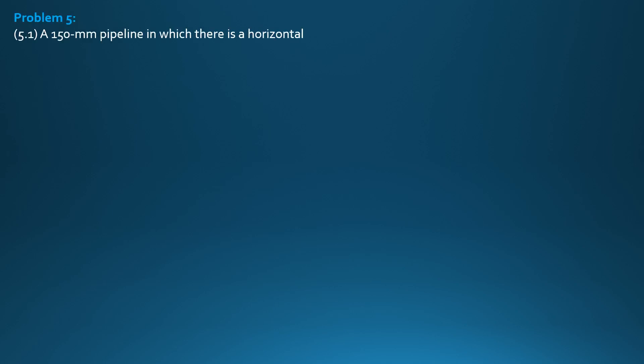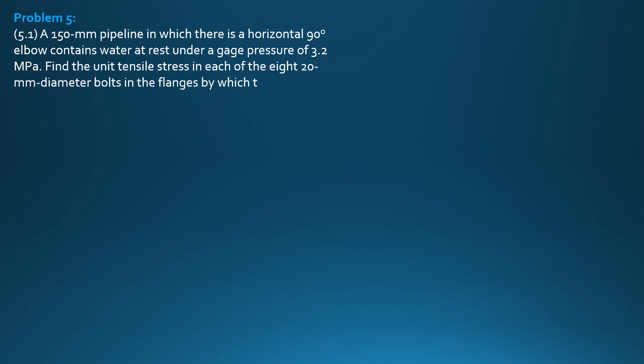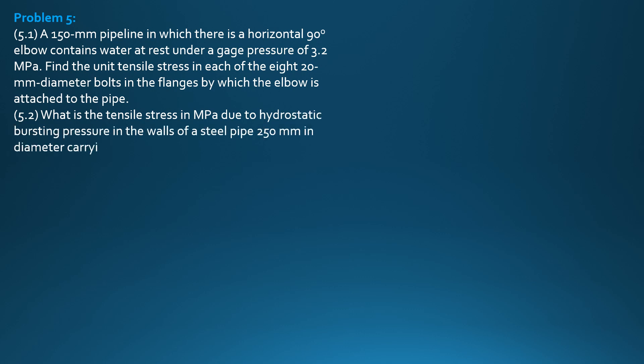Situation 5.1: A 150 mm pipeline in which there is a horizontal 90 degree elbow contains water at rest under a gauge pressure of 3.2 megapascals. Find the unit tensile stress in each of the 8, 20 mm diameter bolts in the flanges by which the elbow is attached to the pipe.